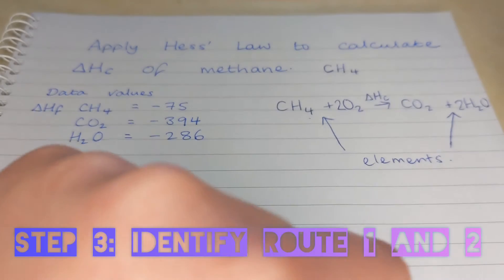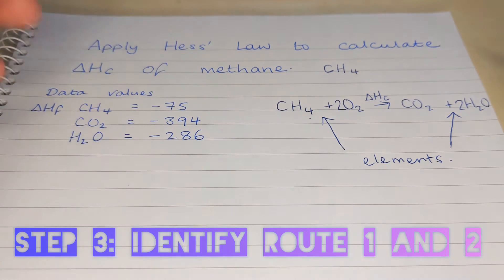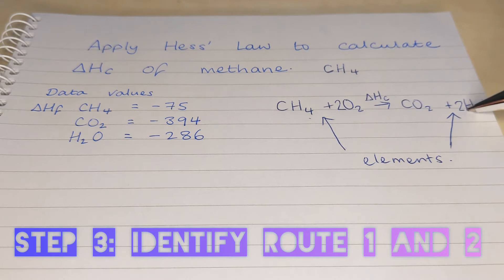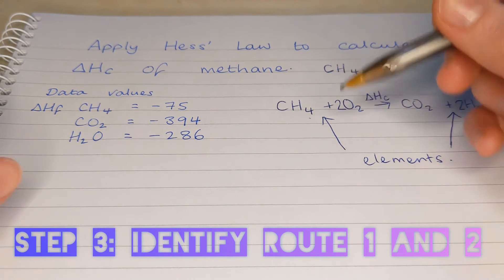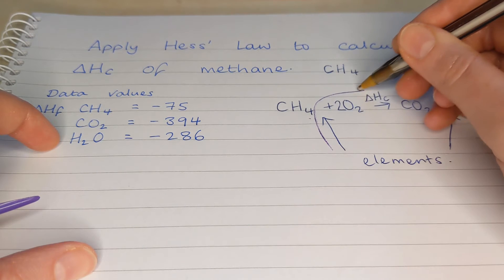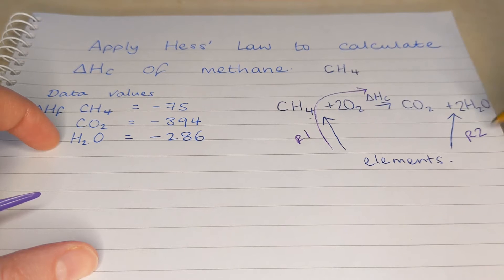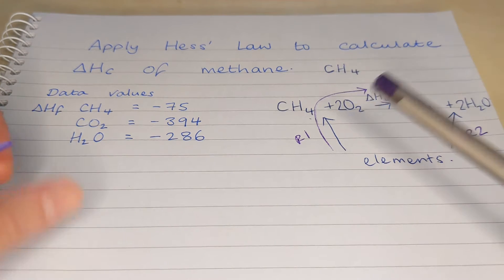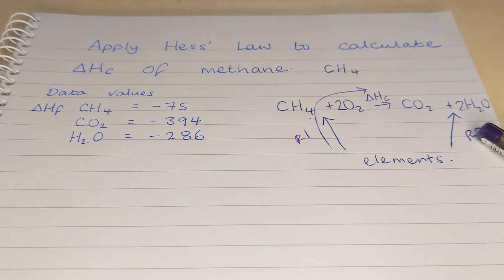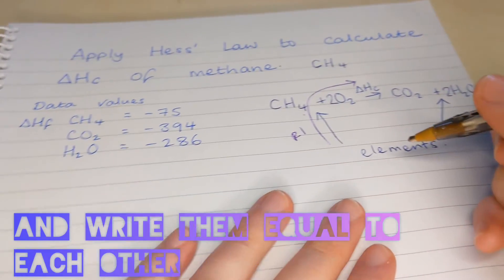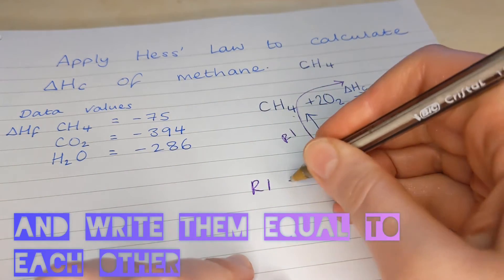The next step is to label the two routes. So Hess's law states that the energy change going by route one is equal to the energy change needed to go by route two. So I'm going to call this one route one and this one route two. So Hess's law states that the energy needed for route one is equal to route two.